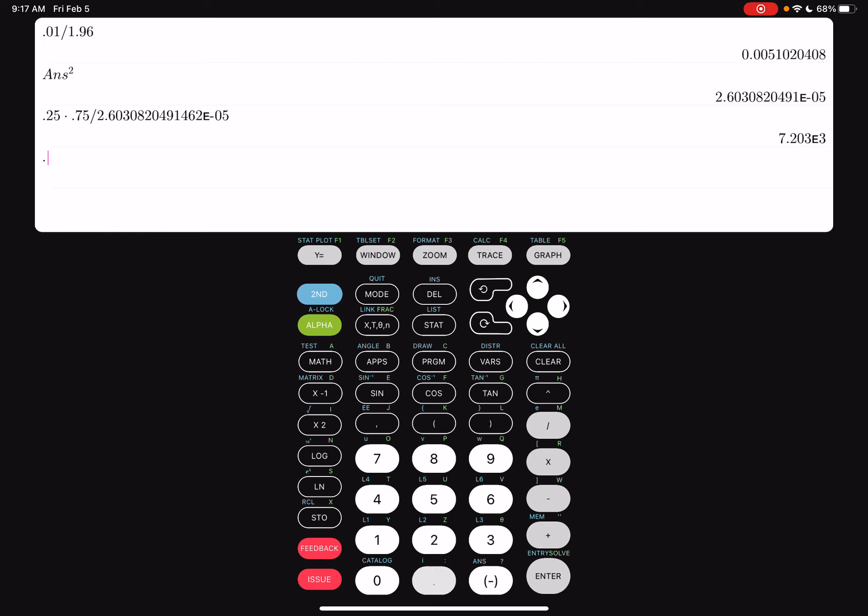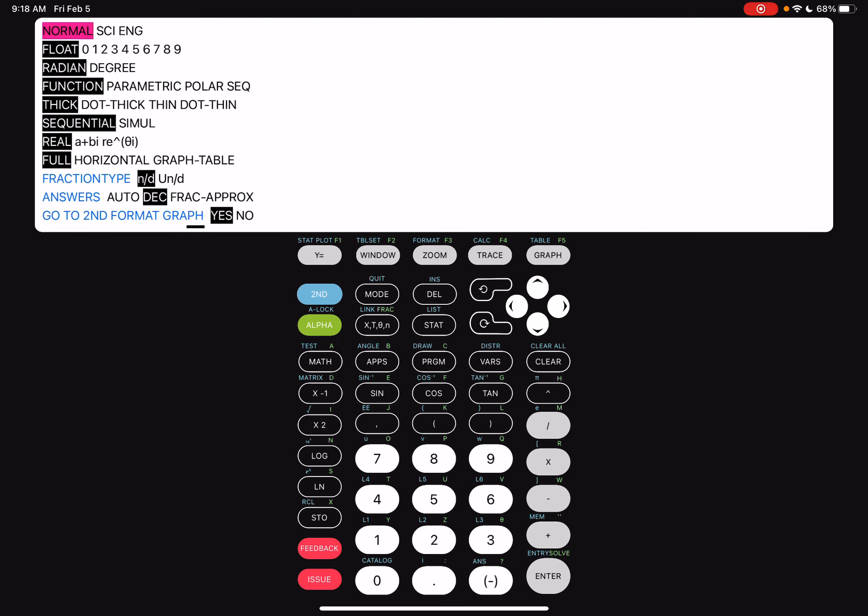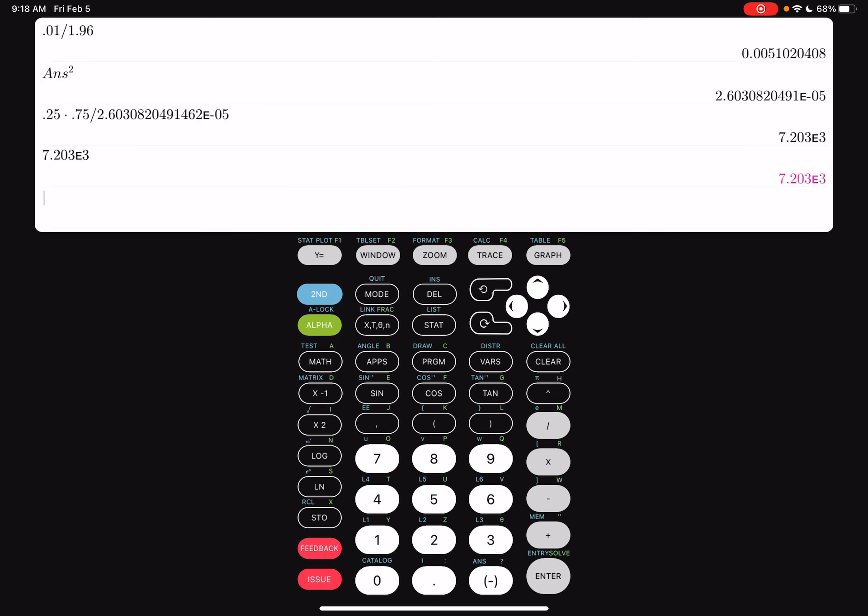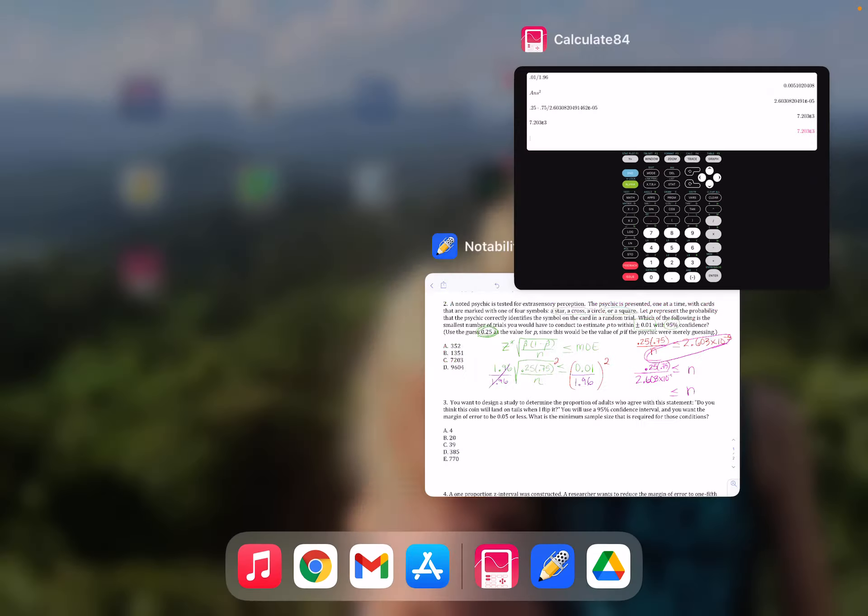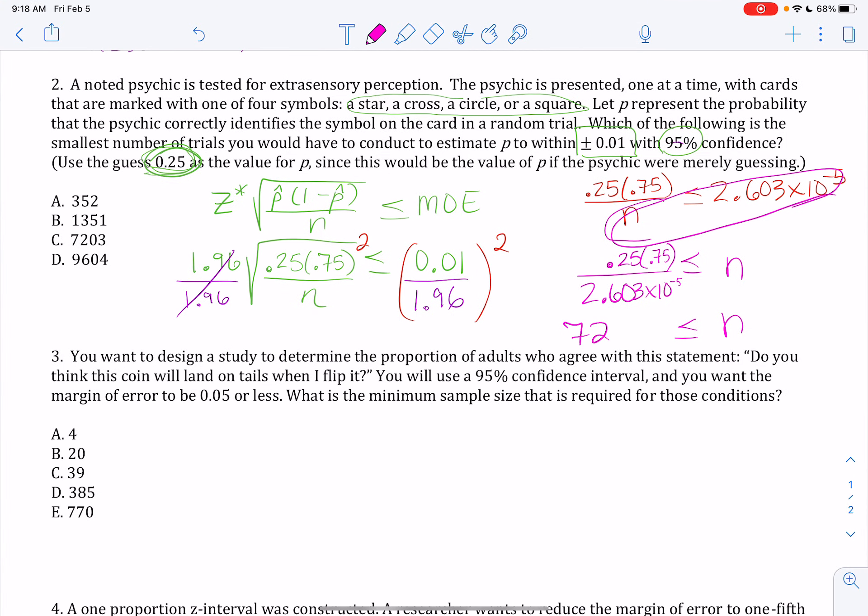Now I'm going to rewrite it. 0.25 times 0.75 over N is going to be less than or equal to that 2.603 times 10 to the negative 5th. It's a really small decimal. But what I need to do here is I need to get N out of the denominator. So I'm going to cross multiply it. In the calculator, I'm going to do 0.25 times 0.75 and divide it by that answer that I already had in there. This calculator is giving me a weird answer. It should be 7,203, and hopefully that's what your calculator says because that's the right answer. It's answer C here.